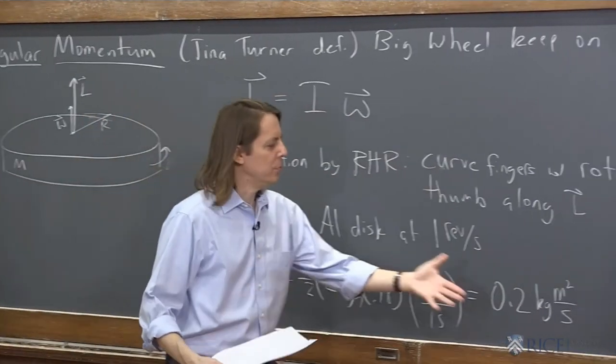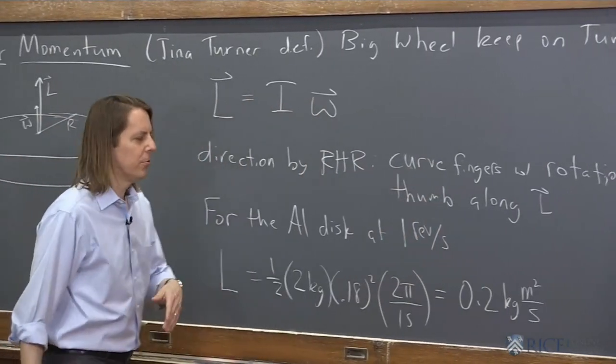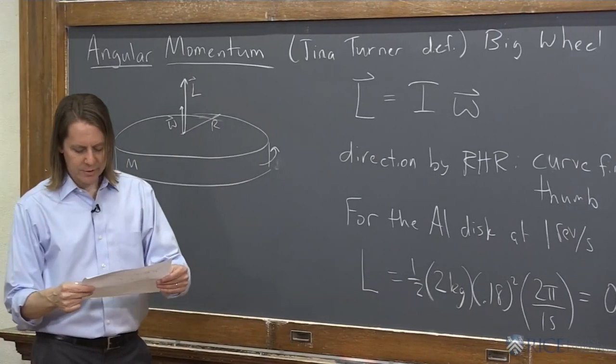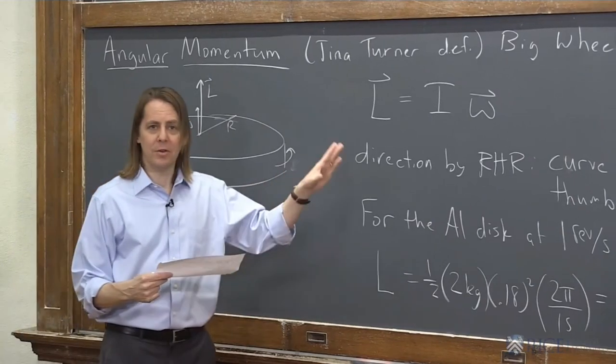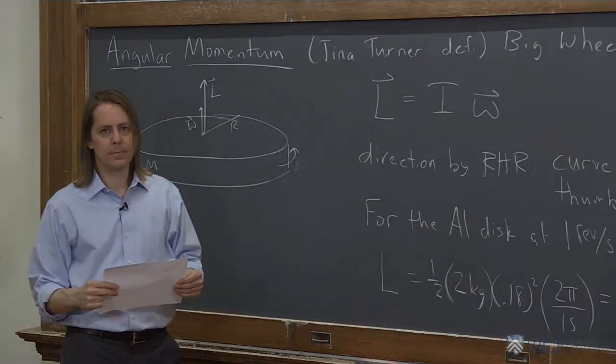0.2 kilogram meters squared per second is the unit of angular momentum. It's not one of these real meaningful units that has a nickname. We just put kilogram meters squared per second. So that's the very basics. That's what angular momentum is and roughly that's how you calculate it for this geometry.